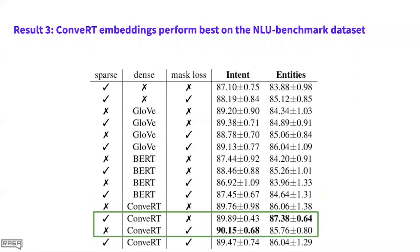The third result is that ConveRT embeddings actually perform the best on the NLU benchmark dataset. The best model we could get for intent and entities uses this ConveRT model from Henderson and collaborators. Those features have been available in Rasa for a couple of months already, but now with DIET, we can get even more out of them with this new architecture.